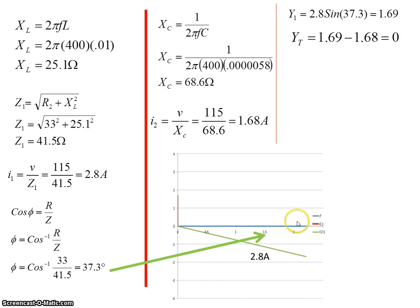So the total current has no Y component. It's all X component. So the current is in phase with the voltage. And that current value is 2.8 times the cos of 37.3, which is 2.2 amps. And let's look at that on the simulation.